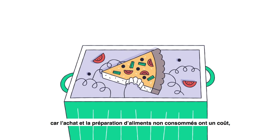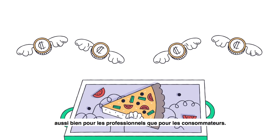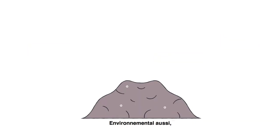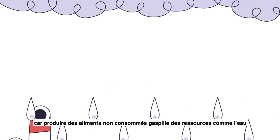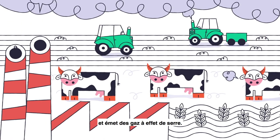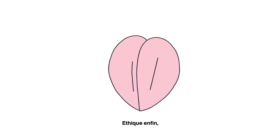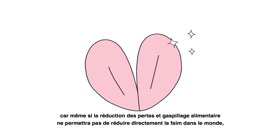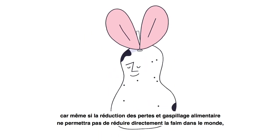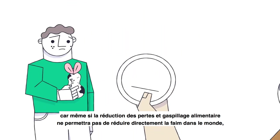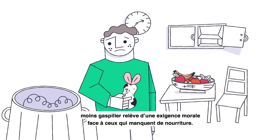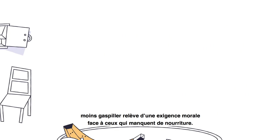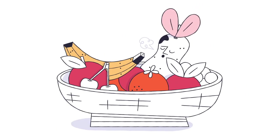All this loss and waste is problematic on three levels. Firstly, economic — since purchasing and preparing food that will not be consumed has a cost, both for professionals and consumers. Environmental too, because producing uneaten food wastes resources such as water and emits greenhouse gases. Finally, ethical — because even though reducing food loss and waste will not directly reduce world hunger, decreasing food waste is a moral obligation that we owe to those who lack food.